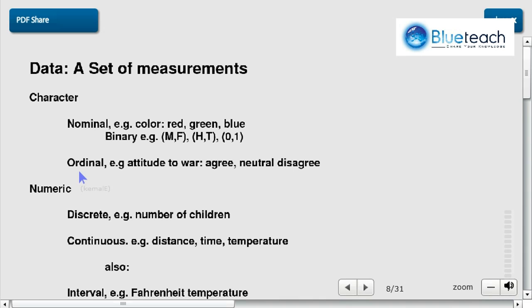It could be ordinal. The difference between nominal and ordinal is that ordinal is ranked. So there's no ranking between male and female. There's no ranking between yes or no. There's no ranking between red, green or blue. But if you want to see attitude to war, there is ranking between agree, neutral and disagree.